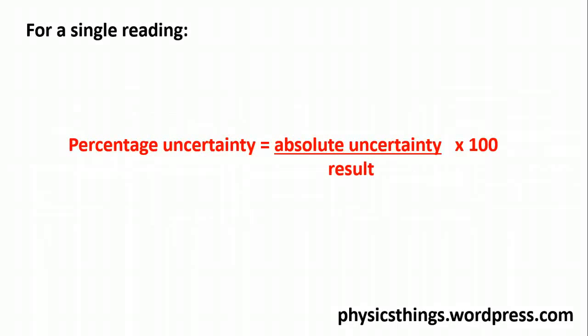So, for a single reading, that is a reading where you are using the precision of the instrument as your absolute uncertainty, you just work it out as a normal uncertainty. That is, you take your absolute uncertainty, your plus or minus value, you divide that by the result that you got, and you times it by 100.